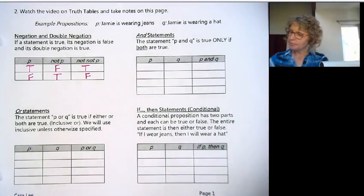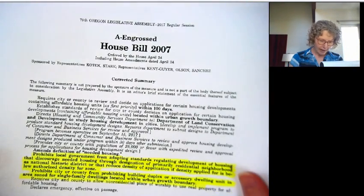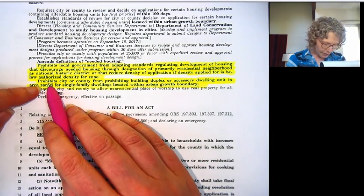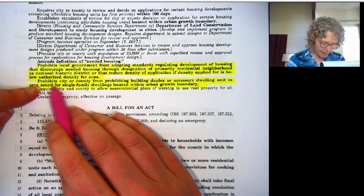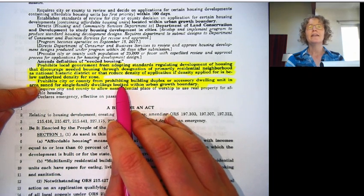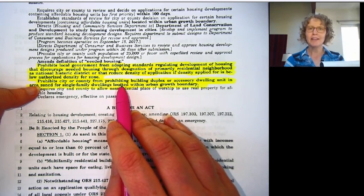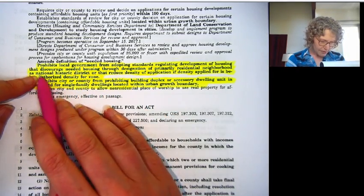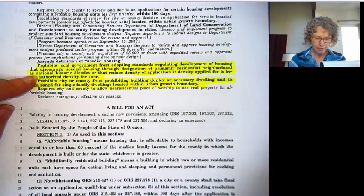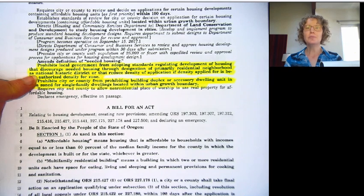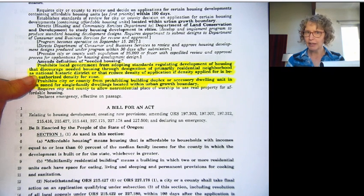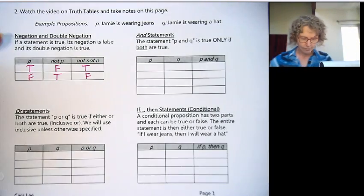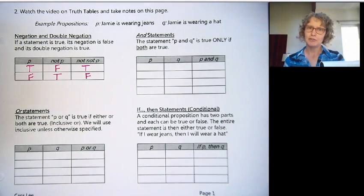You see examples of these double negatives. I have another example. This is from House Bill 2007, trying to get more affordable housing in the city. Here's one example: this prohibits city or county from prohibiting. So it's prohibiting them from prohibiting—that's a double negative. There's another one: prohibits local governments from discouraging. So another double negative. You see those a lot, and sometimes you'll see triple or quadruple negatives and it can be really confusing. That's why negation and double negation are really important.